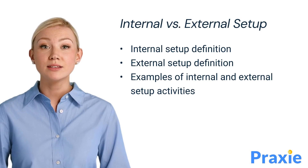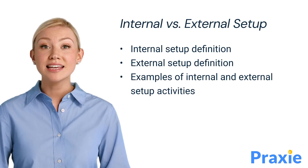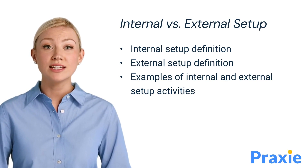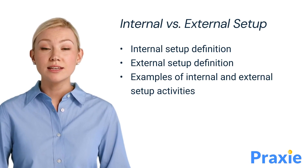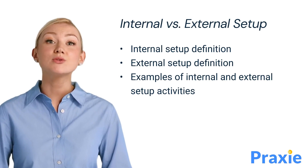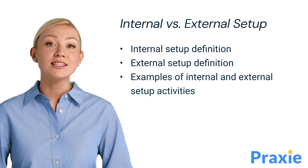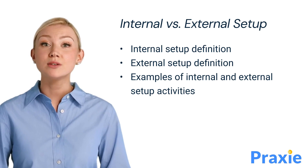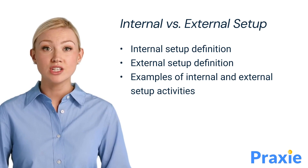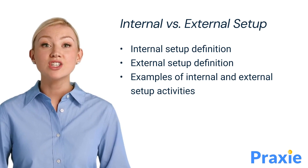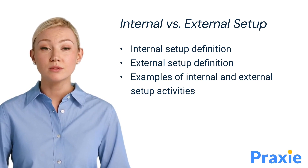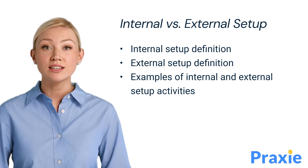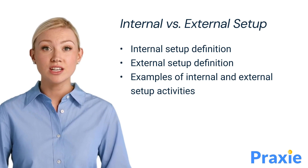Internal setup definition: activities that must be performed while the machine is stopped. Examples include changing dies, calibrating equipment, or adjusting the machine's configuration. An example of internal setup is removing and replacing a machine die during a machine stop.